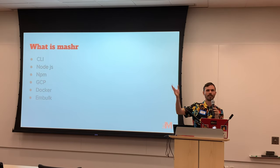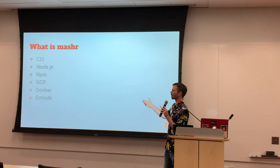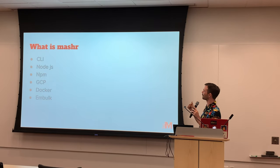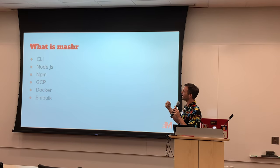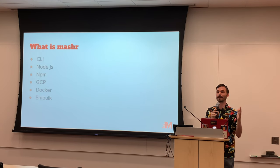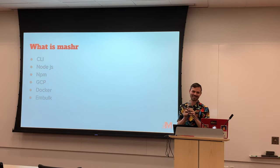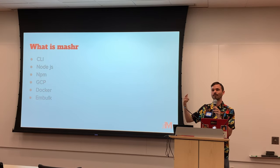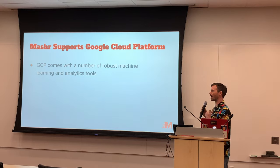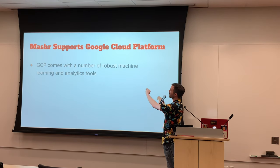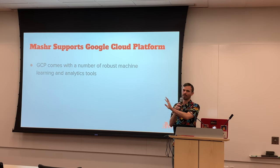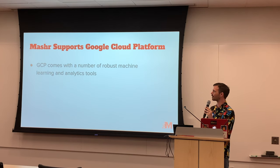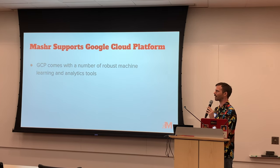Has anybody heard of Embulk? I'll get into it because you need to know about it to understand Masher. Quick show of hands — who here has used AWS in the last year? Who here has used GCP? I love GCP, and it's a good show of hands to know how I should map the services. Masher only launches resources for a data pipeline on Google Cloud Platform right now. We'd love to make it deployable on multiple platforms, but GCP is what we support — we're excited about its robust machine learning and analytics tools.